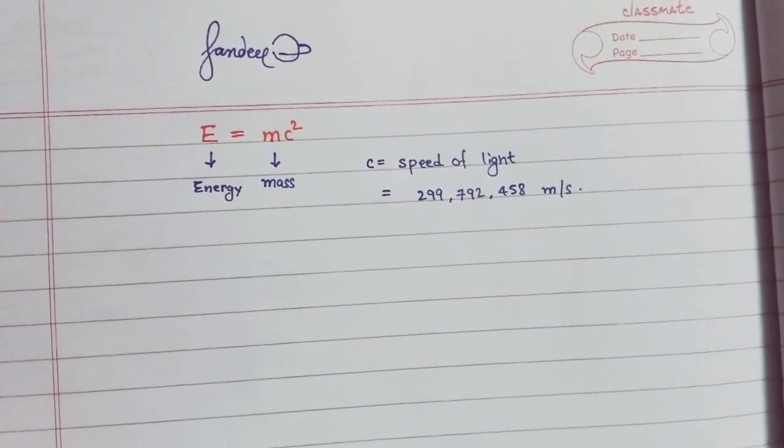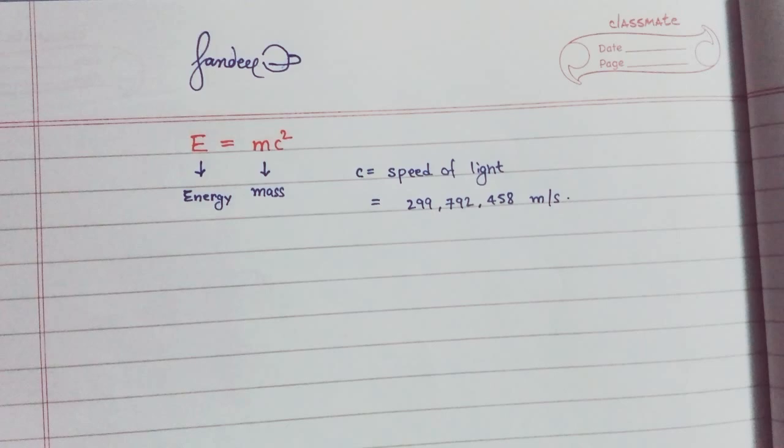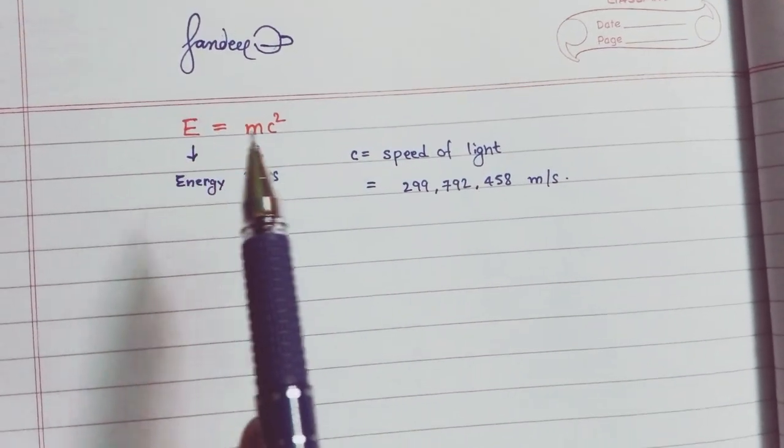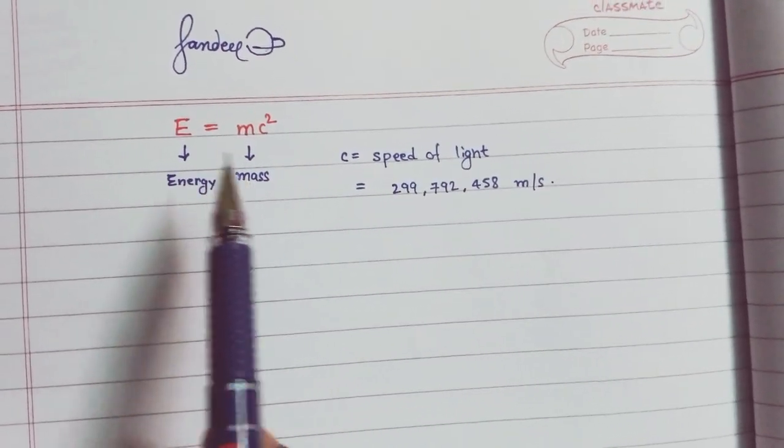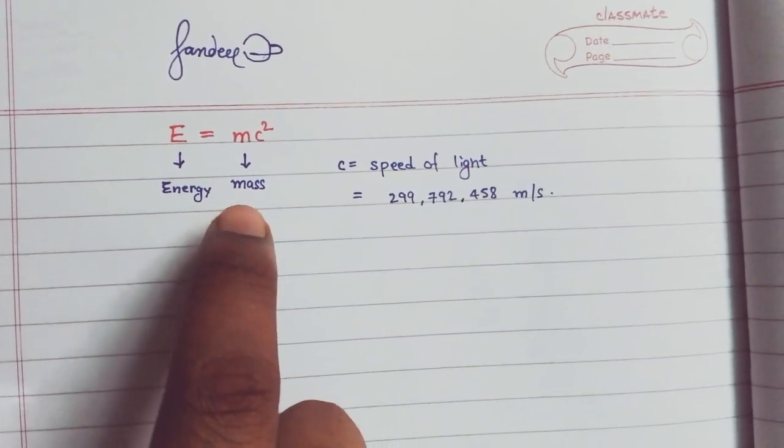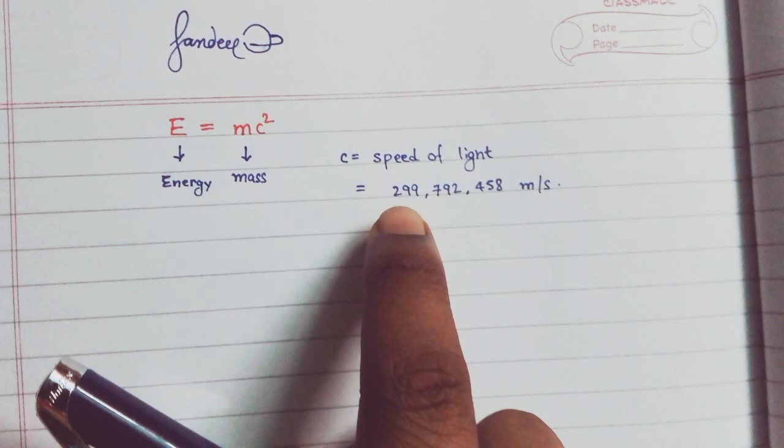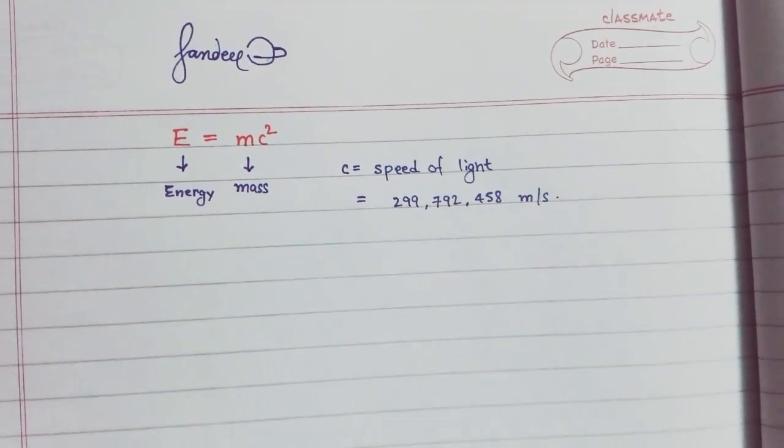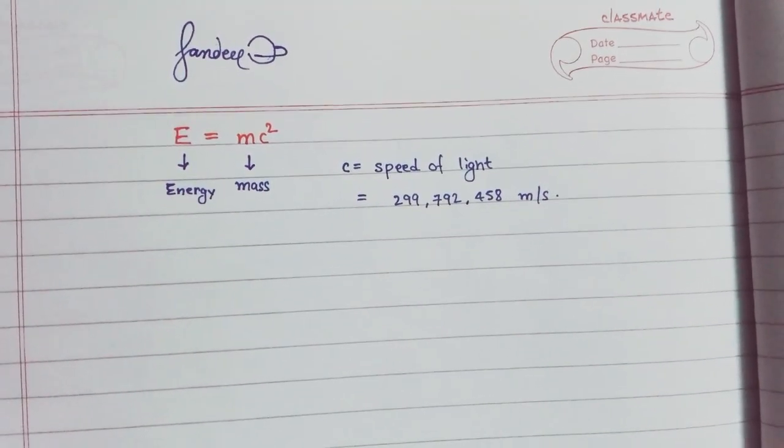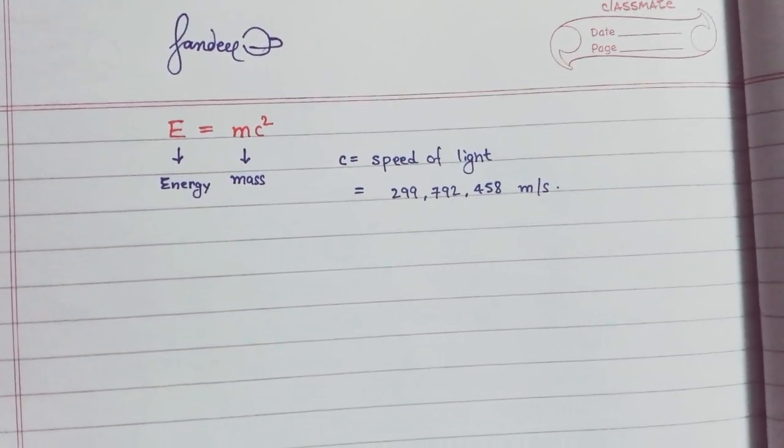Hello everyone, Sandeep here. Today I am going to derive the most famous equation in physics: E equals mc squared, the mass-energy equivalence principle. We all know that E denotes energy, M denotes the mass, and C is the speed of light, which is a constant equal to 299,792,458 meters per second. So how do we get this?